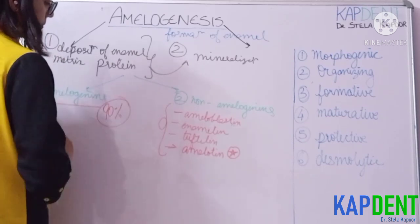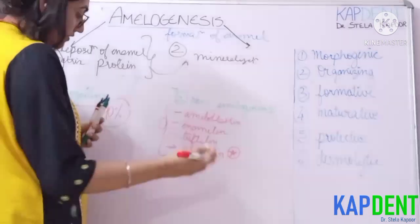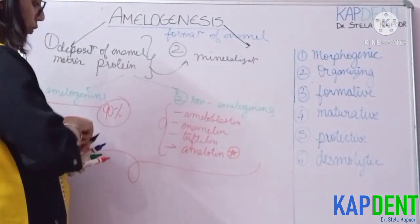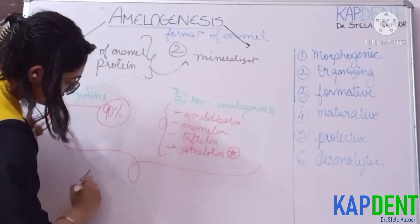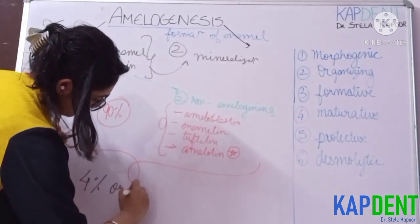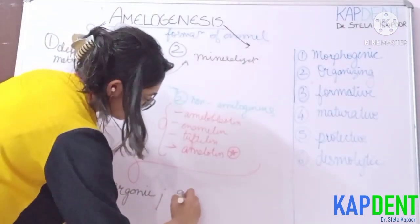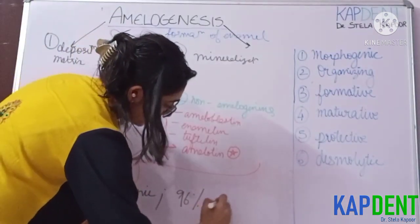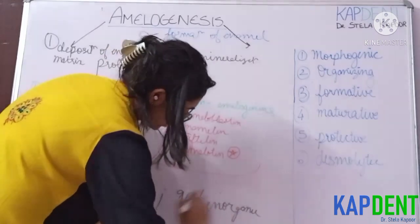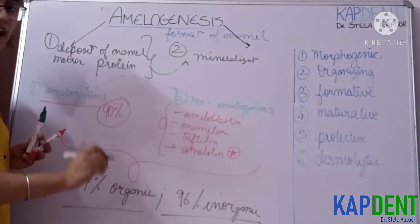The amelogenins constitute about 90 percent of this enamel matrix. The mineralization of enamel is such that the final product of the enamel contains only four percent of this organic matrix, while 96 percent is your inorganic portion. This is the composition of your final enamel.